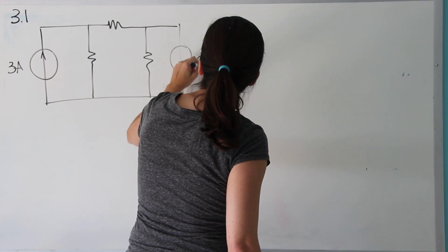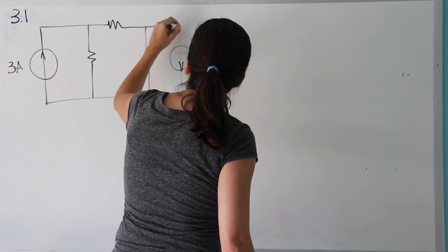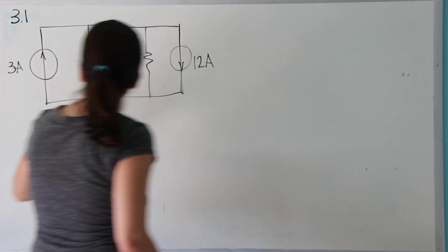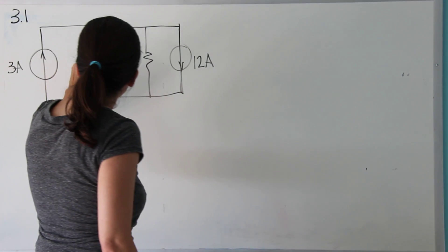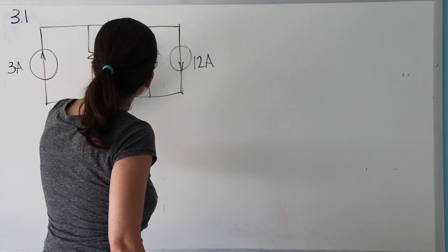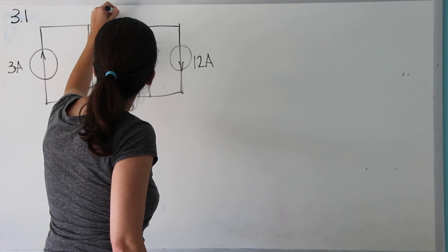Of course, this is not realistic at all. Usually the milliamp source, actually usually you don't have current sources at all. This is 2 ohms, 7 ohms, and 6 ohms.